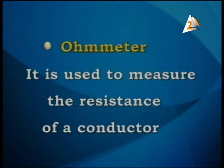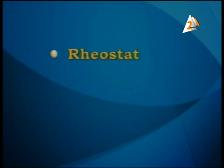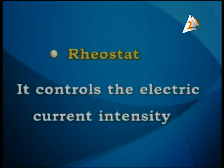If I have a rheostat — variable resistance — or if I have a constant, stable resistance in its place. The rheostat is one of the devices used to control electric current intensity by human control.